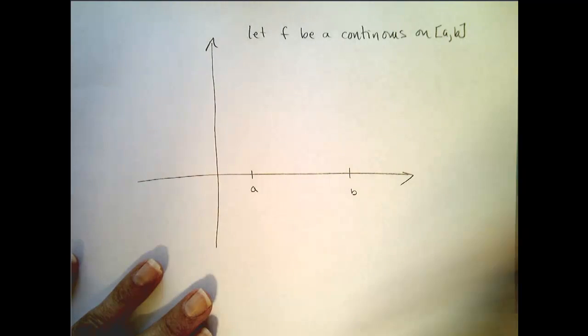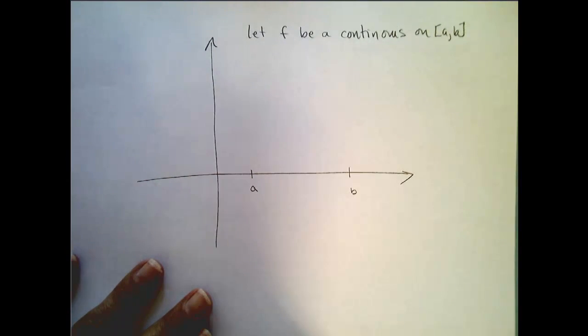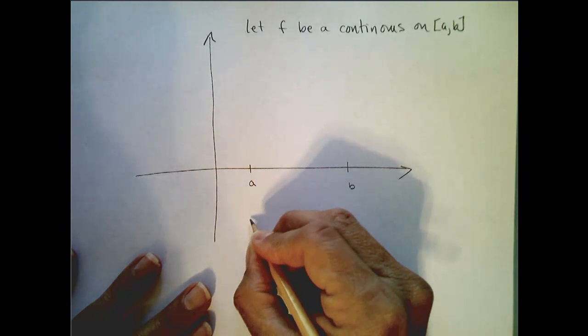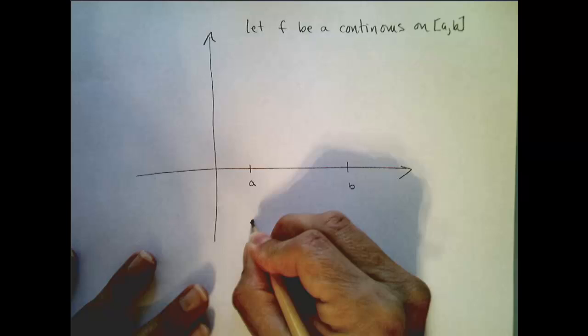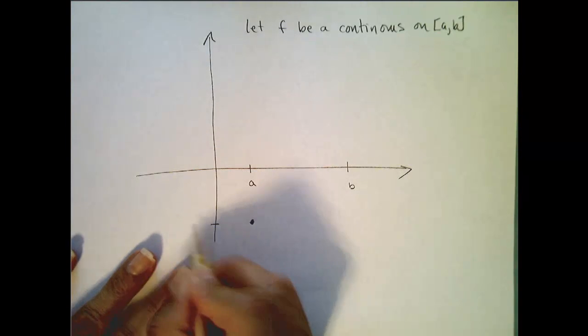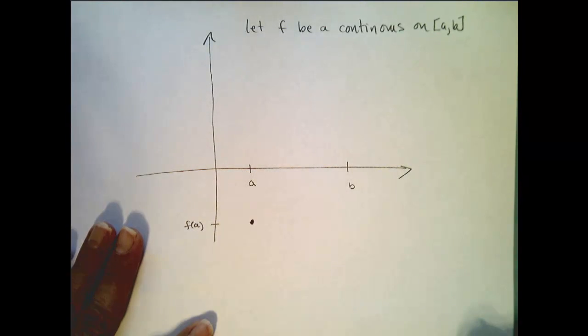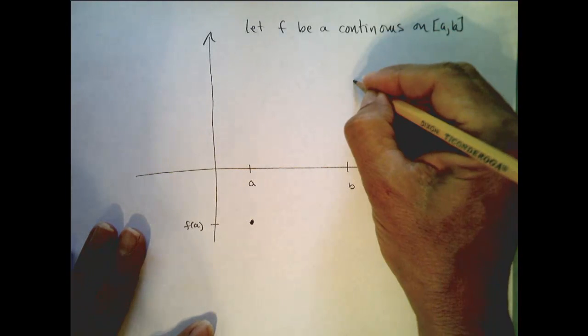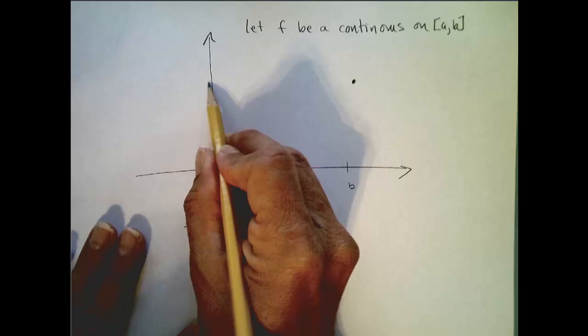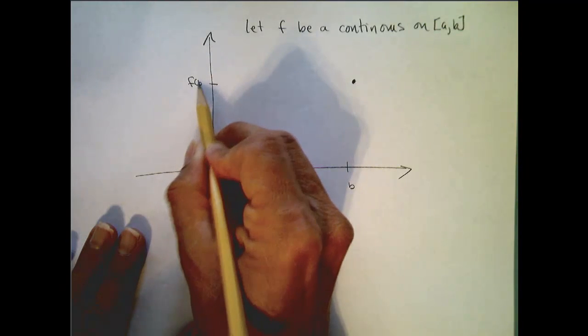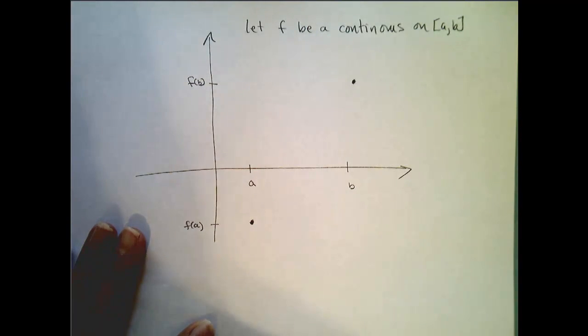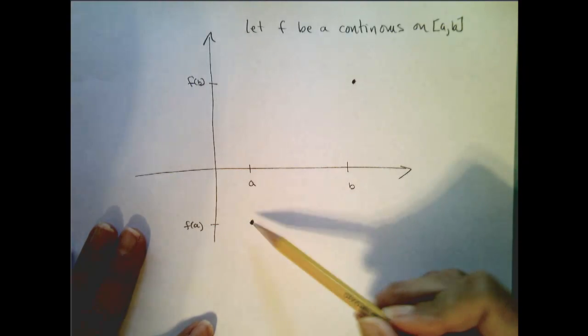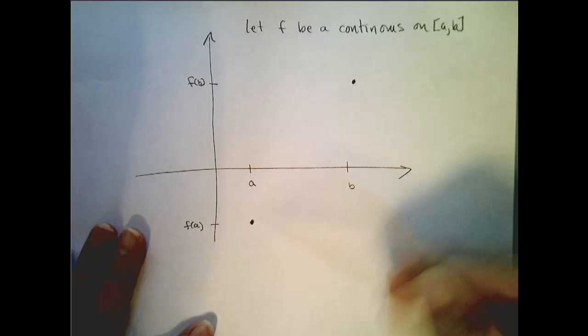Alright, so before you draw this, I want you to have a getting mapped to a negative number. So let's say somewhere down here. So that value will be f of a. And let's let b be mapped to some positive number. So we'll say up here is our f of b. And so what I challenge you to do is to sketch a continuous graph from this point to this point.